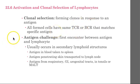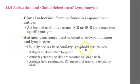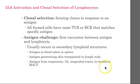T cells have their antigen challenge when they are in those secondary lymphoid structures. An antigen challenge is that first encounter between the antigen and a lymphocyte. Antigens in our blood are brought to the spleen, or if an antigen penetrates the skin it is taken to a lymph node. Antigens encountered within the respiratory, GI, or urogenital tracts, or in the tonsils or MALT (mucosa-associated lymphoid tissue), are encountered by T cells within those areas.